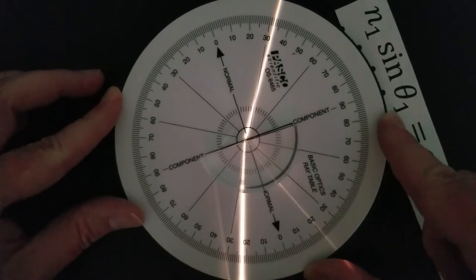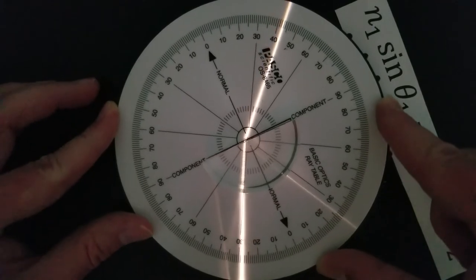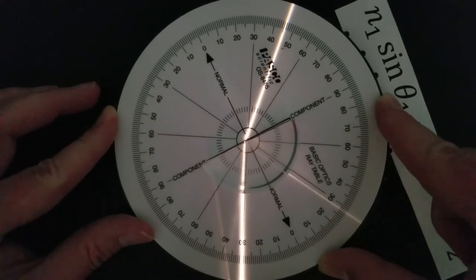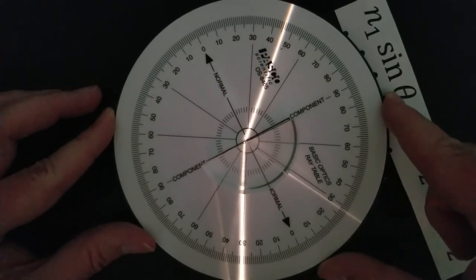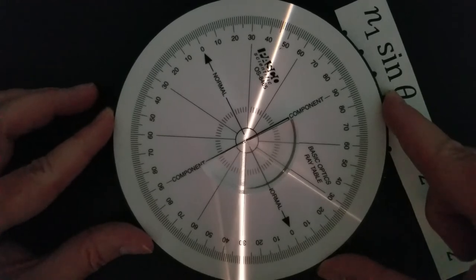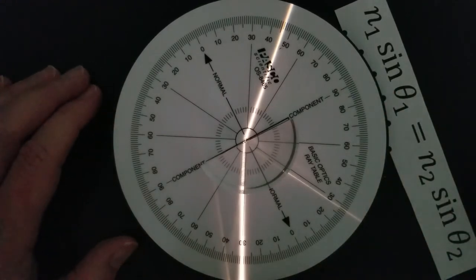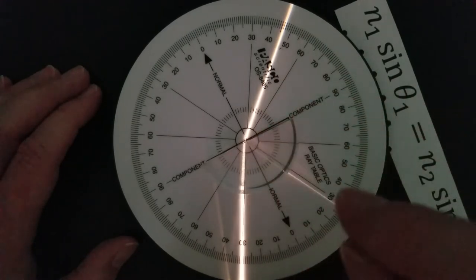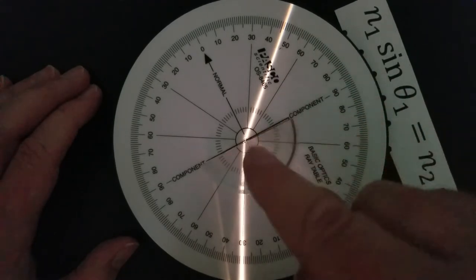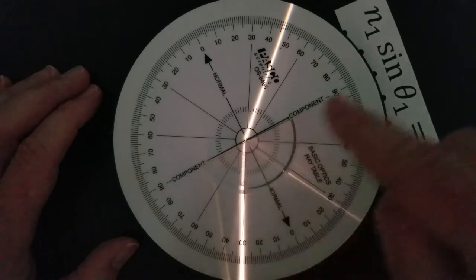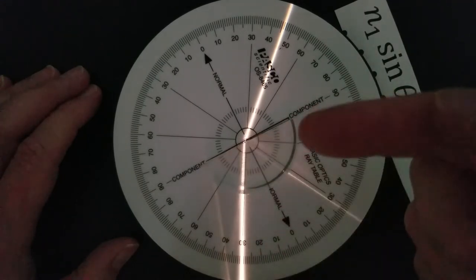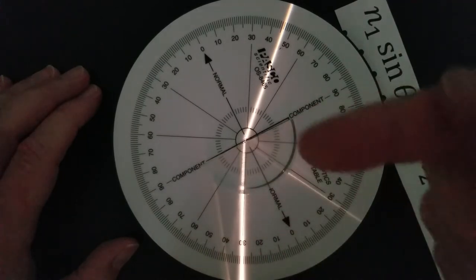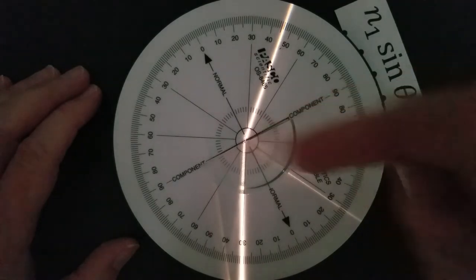And so as I keep turning, at some point we reach what's known as the critical angle. The critical angle is when the beam of light can no longer escape the material. When that happens, the beam of light will actually go along the edge and then get into what we call total internal reflection. It actually will bounce back into material.